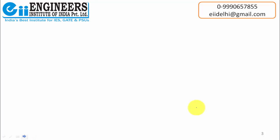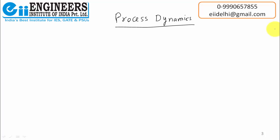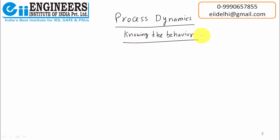Today we will discuss about the meaning of the subject — Process Dynamics. What is the meaning of this subject? If we understand process dynamics, the definition is very, very simple. It's about knowing the behavior. Yes, that is the definition — a very simple definition. Knowing the behavior.